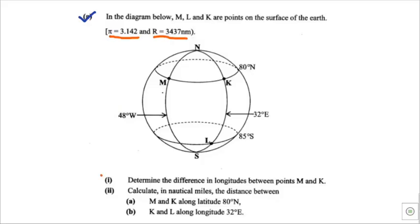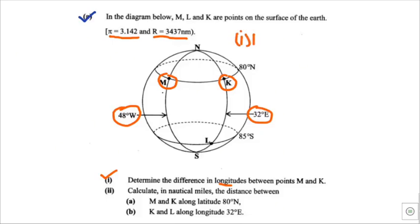Roman numeral 1: determine the difference in longitudes between points M and K. They want you to find the difference in longitudes between point M and point K. Point M is lying on this longitude and point K is lying on this longitude.